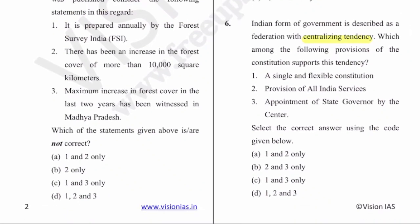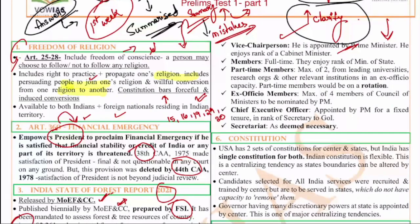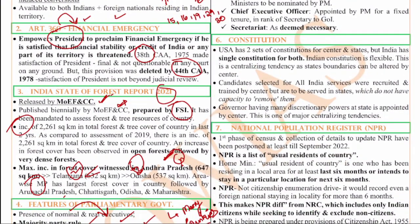The sixth question is talking about centralizing tendency, which means it is talking about federalism. Provisions listed include: single and flexible constitution, provisions of all-India services, and appointment of state governors - all talking about centralizing tendencies. In the Indian constitution, our federalism is unique - a quasi-federalism - because most provisions lean towards the center. The center has more powers. Countries like USA represent a classic example of federalism where power is divided equally between center and state.